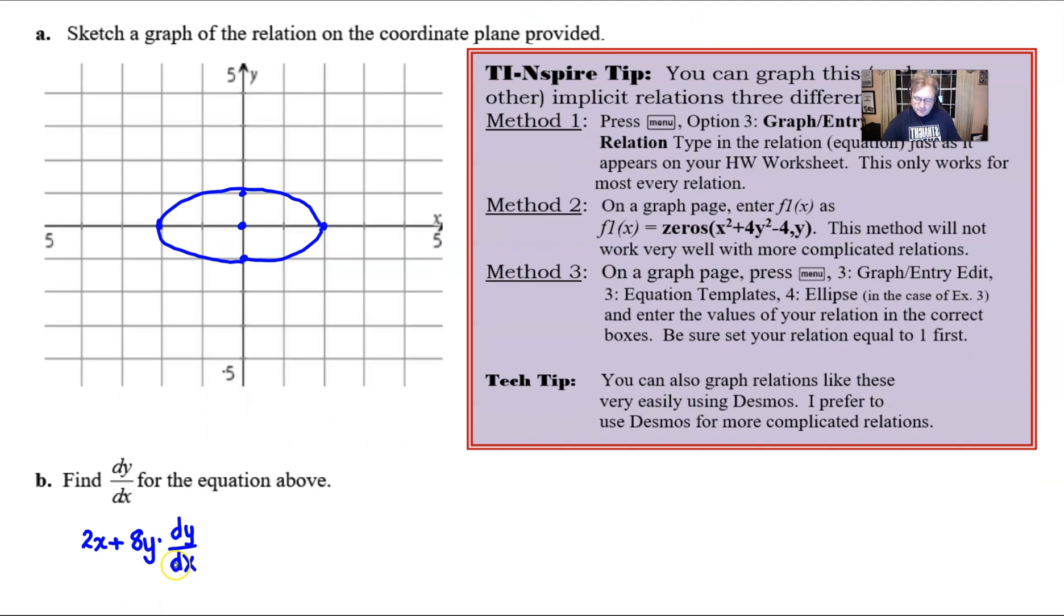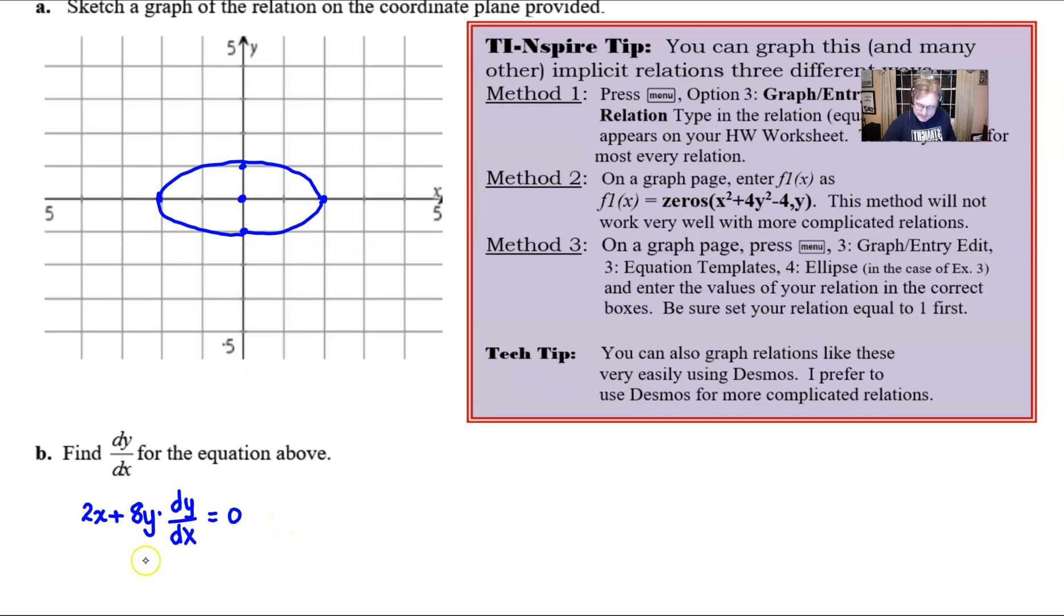And then the derivative of 4 is going to be 0. And at this point, solving for dy dx doesn't seem like it's going to be too terribly difficult because we would do a couple of different things. We would first of all, subtract the 2x over to the right side. And then we would divide by the 8 times y. And if you choose to do so, you could go ahead and reduce this by factoring out and canceling with a 2. And so we would have negative x over 4 times y. And it's perfectly acceptable to present that derivative in the form of x and y. Let's keep moving on with this question and see what else is being asked.